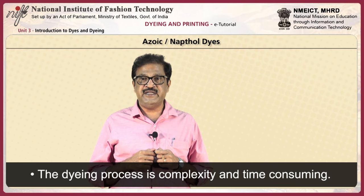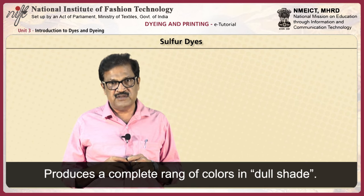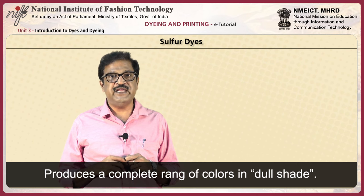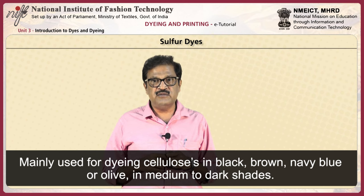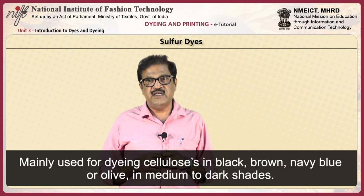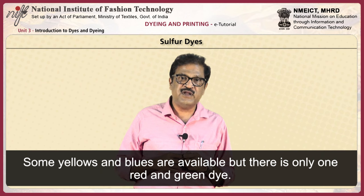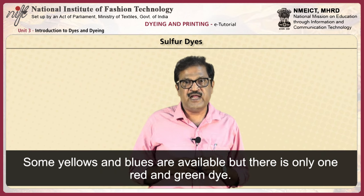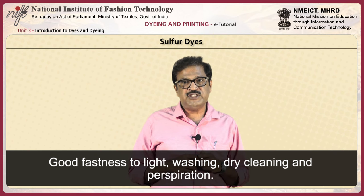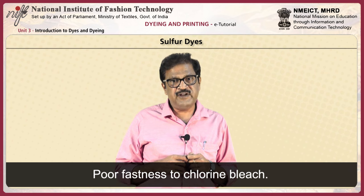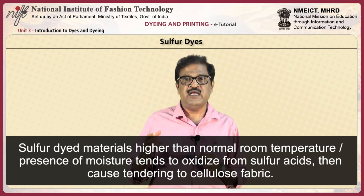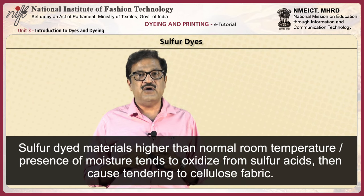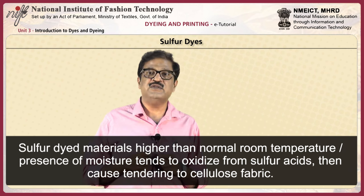Sulphur dyes: sulphur dyes produce a complete range of colors in dull shades. They have poor light fastness in pastel shades. Sulphur dyes are mainly used for dyeing cellulosic fabrics in black, brown, navy blue, or olive green in medium to dark shades. Some yellows and blues are available but there is only one red and one green type. They have good fastness to light, washing, dry cleaning, and perspiration. Sulphur dye has poor fastness to chlorine bleach. Sulphur-dyed materials kept at higher than normal room temperature in the presence of moisture tend to oxidize, forming sulphur acids which cause tendering to cellulosic fabric.